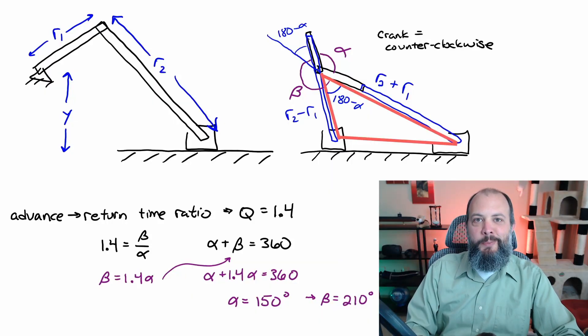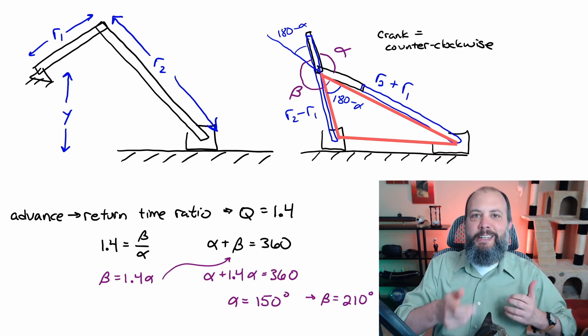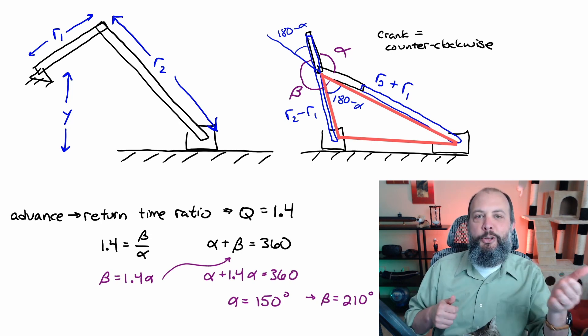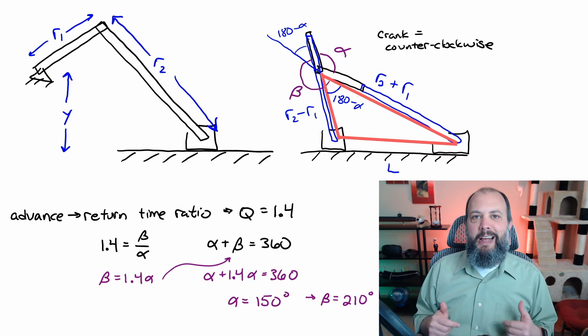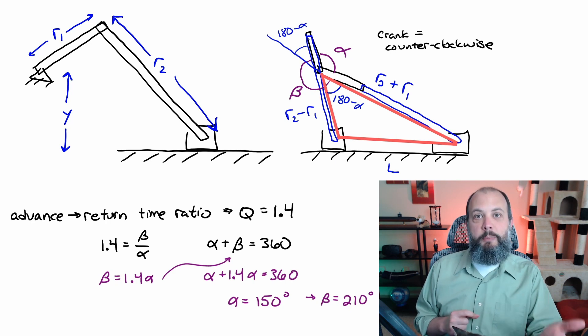So next in order to find the length of the coupler I'm going to be using this red triangle. The length of the right diagonal is the sum of the coupler and crank lengths. The left diagonal is going to be the difference, the coupler length minus the crank length, and then that angle in between is going to be 180 degrees minus the angle alpha, and the base of triangle is the stroke length which is one of our design criteria. And since I already chose the length of the crank I'm going to be able to solve for the coupler length using a law of cosines.